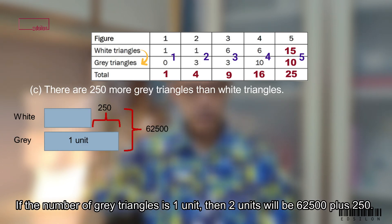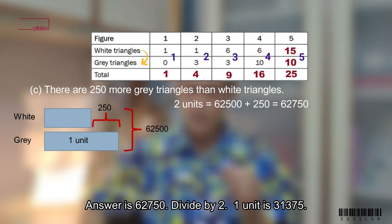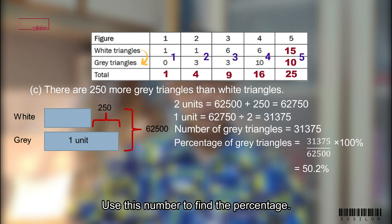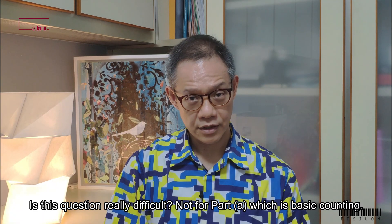You can also find the number of grey triangles directly. If the number of grey triangles is one unit, then two units will be 62,500 plus 250. Answer is 62,750. Divide it by 2. One unit is 31,375. Use this number to find the percentage.